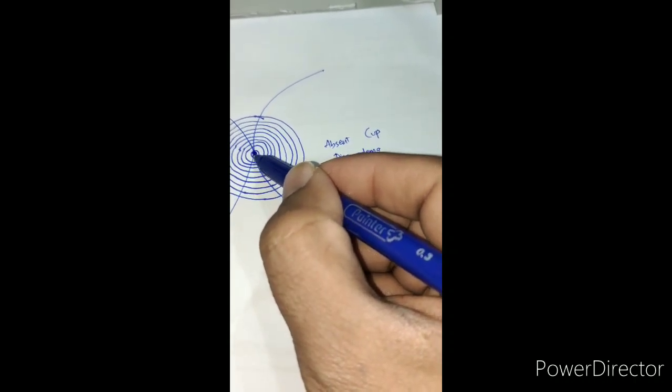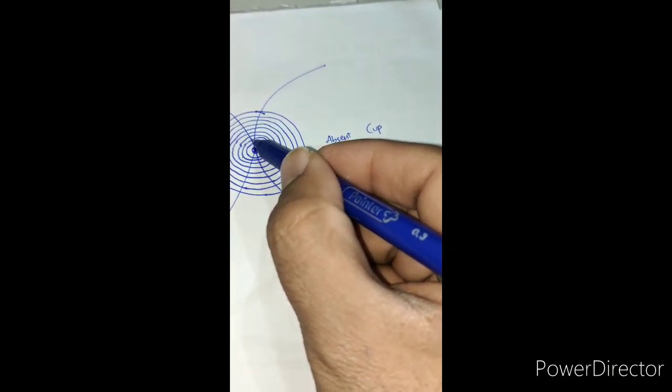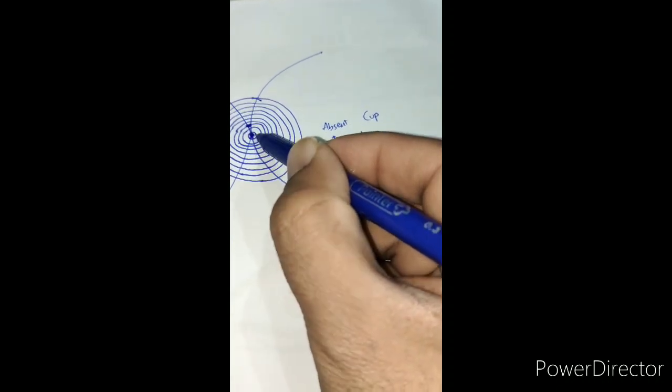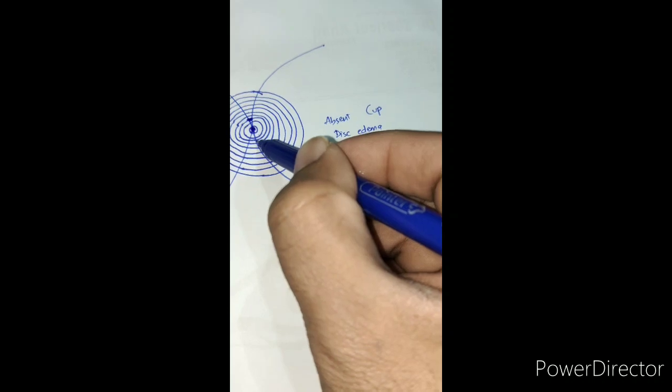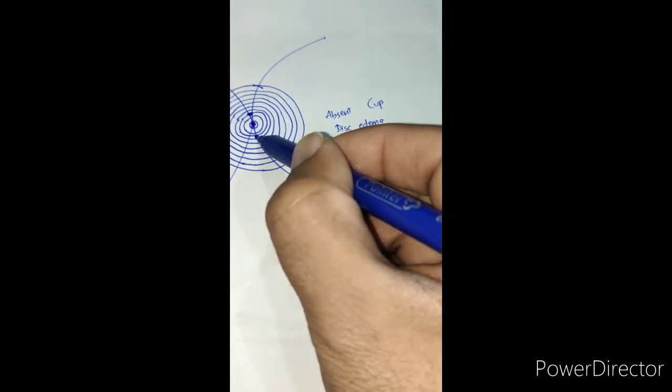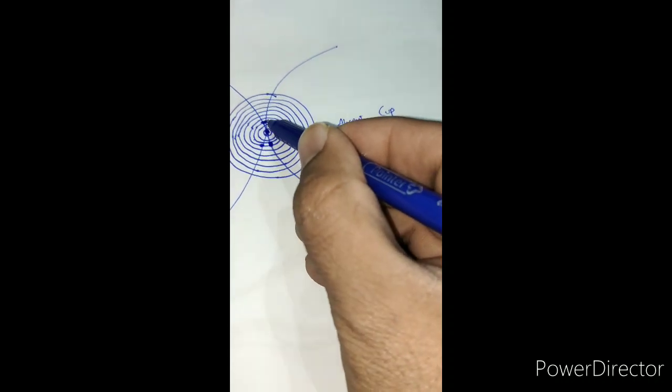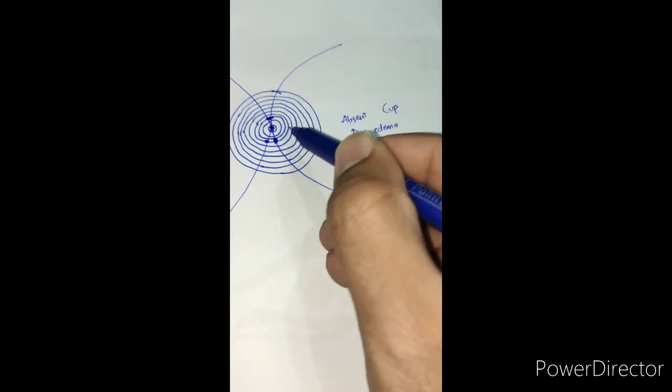Now if there is a cup which encircles the first, the innermost three lines, like in most of the normal patients we get a cup of such size...